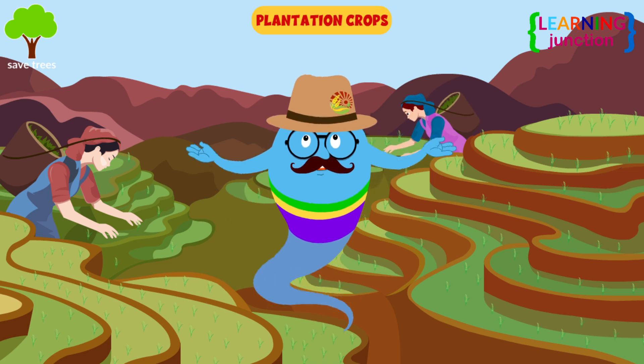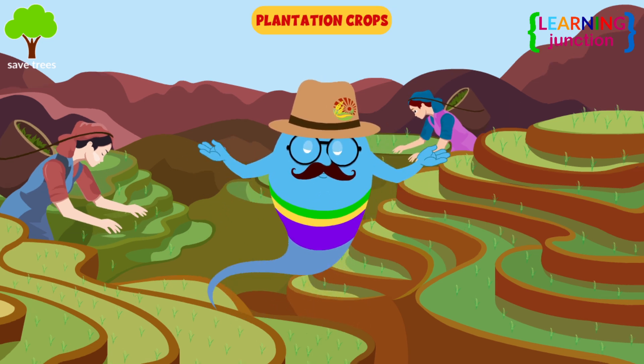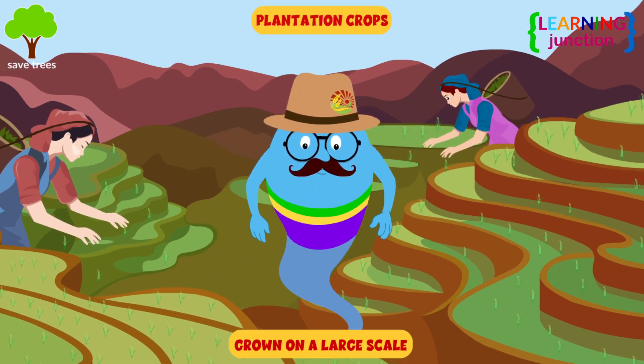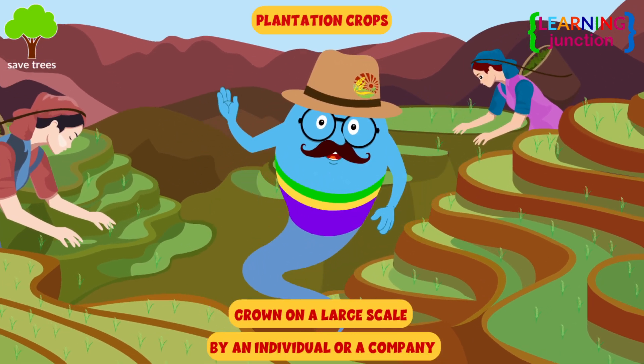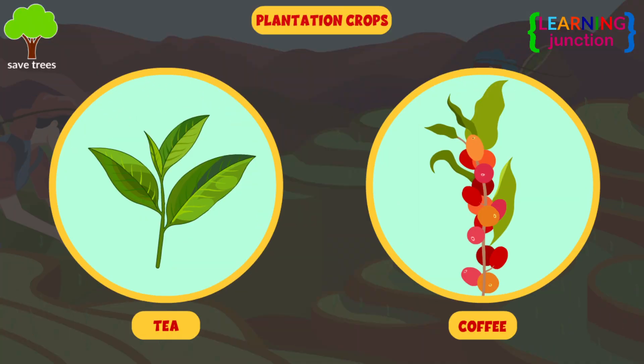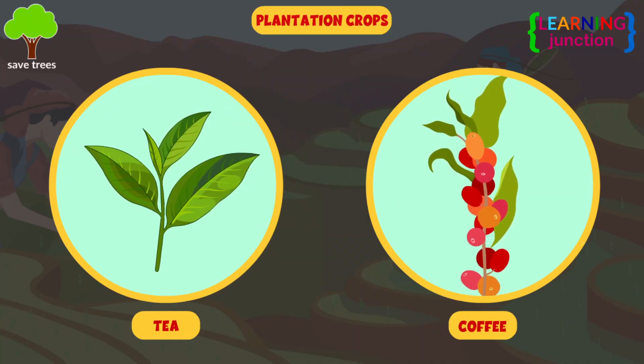Plantation crops: they are grown on a large scale by an individual or a company. For example, tea, coffee, etc.